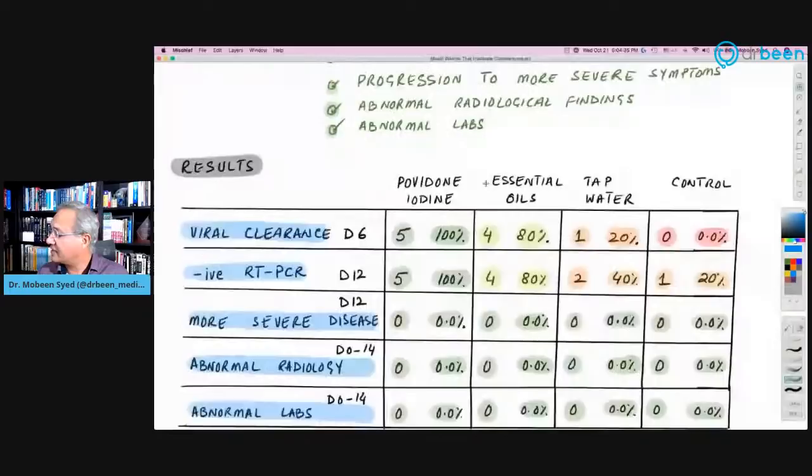And the results are excellent. Small study. But look at the results. So this is the group one, povidone iodine, essential oils group two, tap water three, and control. So viral clearance at day six, all five folks who were using iodine three times a day for seven days. So here, this is day six. By day six, all of them had become 100% virus cleared by RT-PCR. So that is excellent. Those who are taking essential oils, four of them became virus free by day six. And that was 80%. Tap water, one of them, 20% and control, none of them, zero percent.